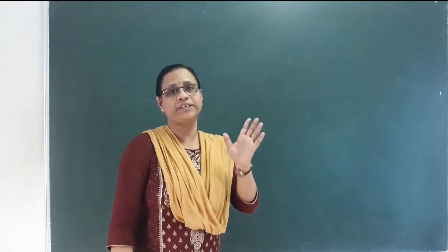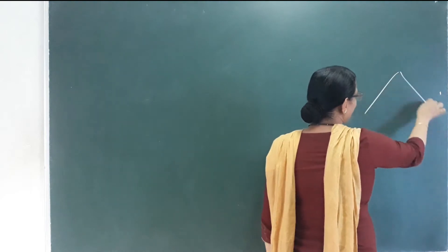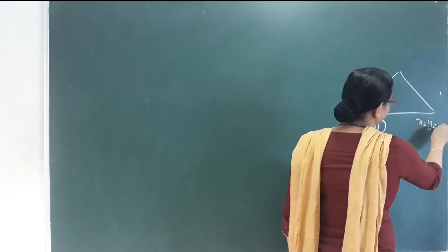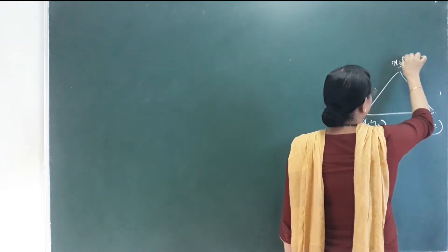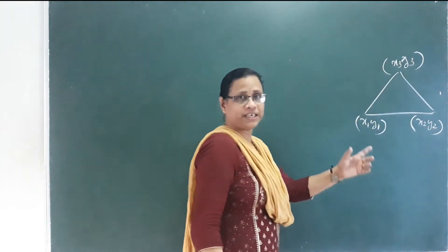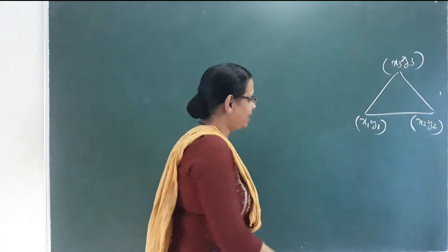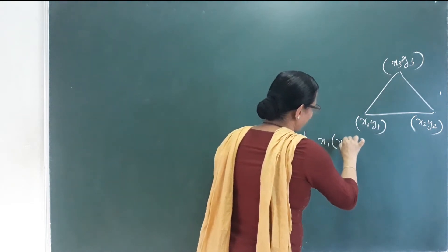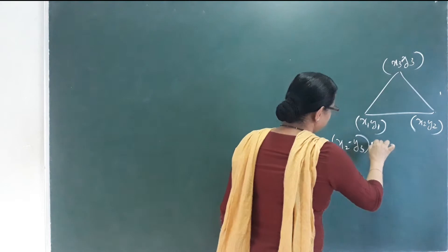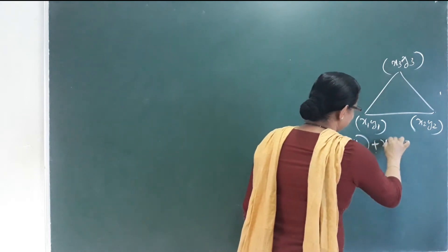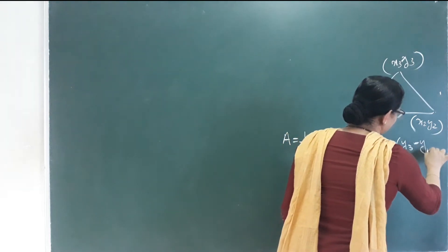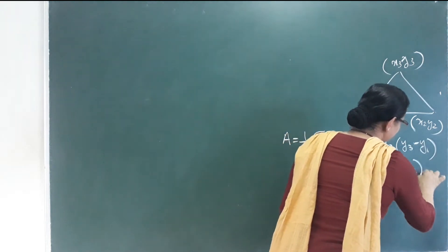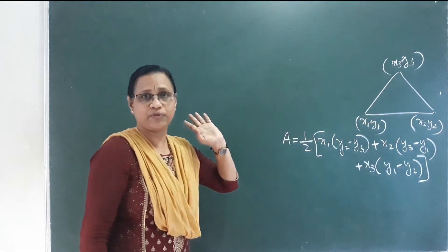The next point is the area of a triangle. For three vertices with coordinates (x1, y1), (x2, y2), (x3, y3), the area depends on x1, x2, x3 and includes a term like x3 × (y1 − y2). This formula is used to find the triangle area.